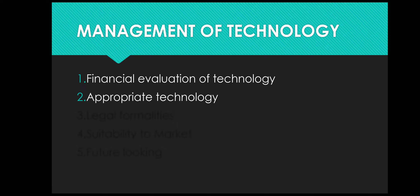It must match the product specification — that is, whatever products the company is manufacturing, the technology should be suitable for the same. Next, the firm must have adequate knowledge of its installation and maintenance. If not, the firm must have a tie-up with manufacturers or agencies who can help in installation, maintenance, and repairs. Once the technology is introduced, you also have to think about maintenance, repairs, and installation.